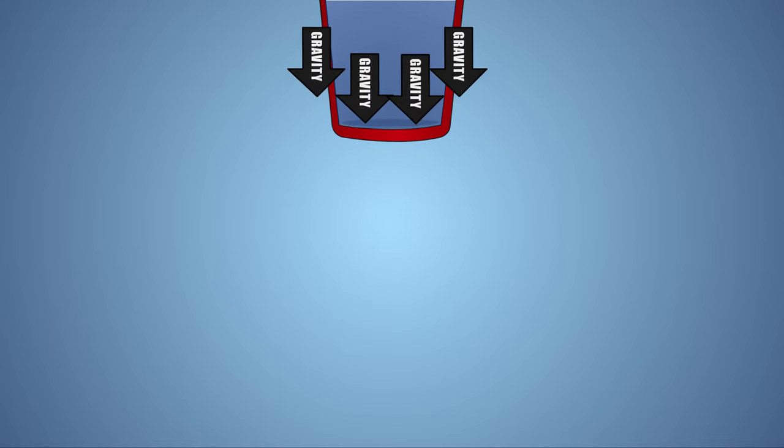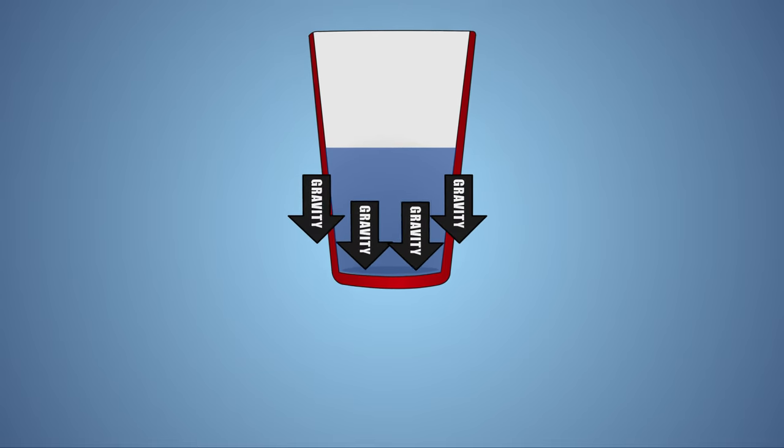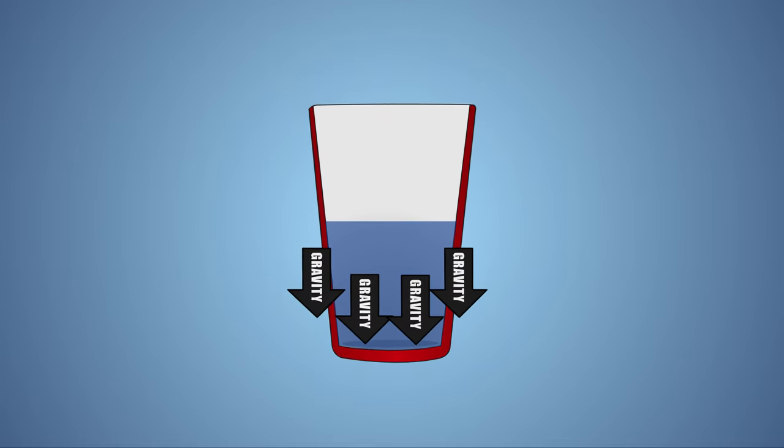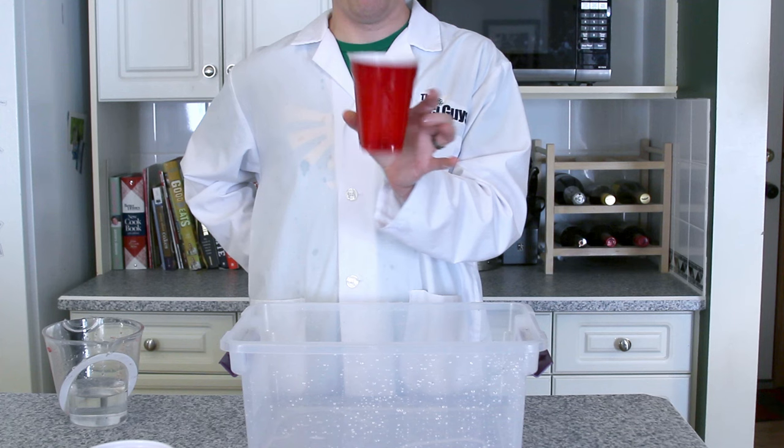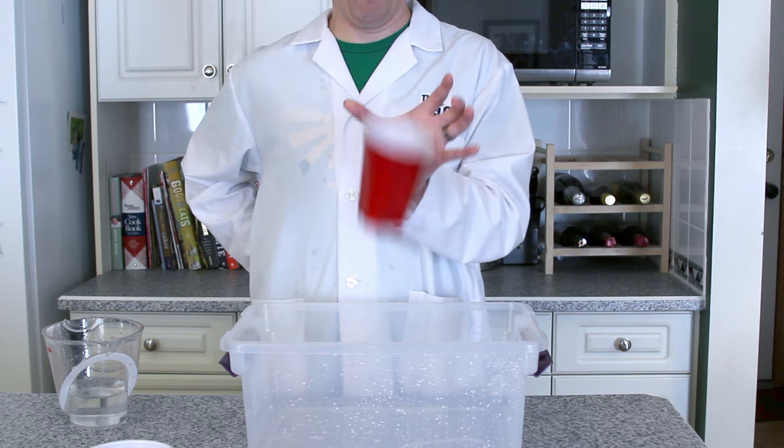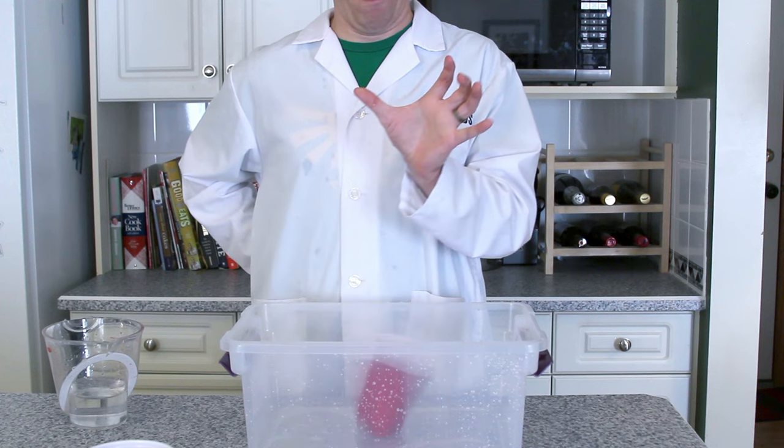When we drop the cup, gravity pulls on both the cup and the water at the same time, accelerating both of them towards the ground at the same rate and causing them to land on the ground at the same time. Because they fall at the same rate, the water is already taking the easiest path to the ground and it doesn't get a chance to pour out of the hole.